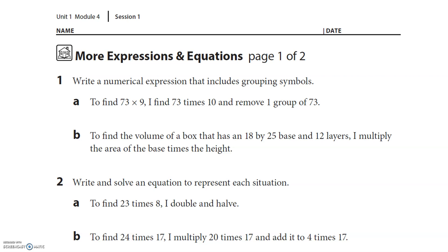Alright, so we're writing numerical expressions. Expressions means we are not going to be putting answers yet. And they want grouping symbols, so that means like parentheses. Here we go. To find 73 times 9, I find 73 times 10, and then I'm going to remove one group. Remove, I'm going to subtract. So 73 times 10, I'm going to multiply those two numbers, and I'm going to remove one group of 73. Now some of you might just write it like this: 73 times 10 minus 73. Either works. Both are equivalent.